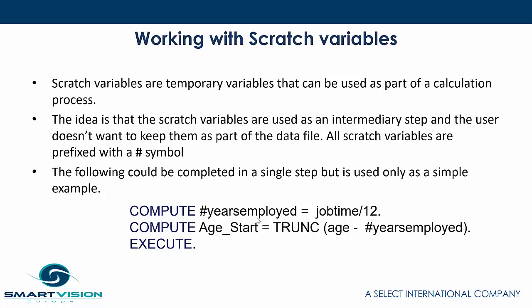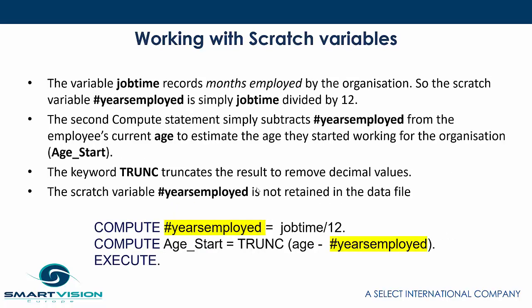Scratch variables are easy to identify because they all have a prefix of a hash symbol in front of them. So here we have a scratch variable called hash years employed. The variable job time actually records the months employed by the organization, so if we want to turn that into years, we divide job time by 12 and the field created is called hash years employed — that's our scratch variable. The second statement then subtracts the number of years employed from the employee's current age to estimate the age they started working for the organization.